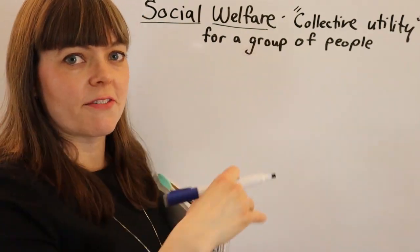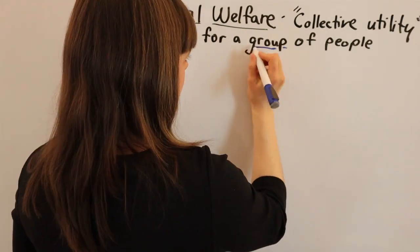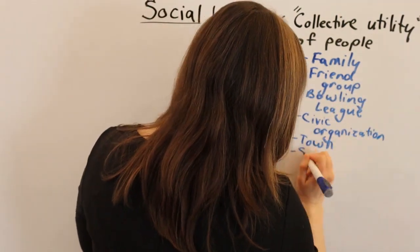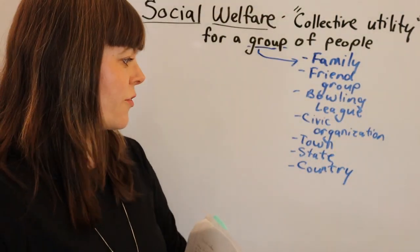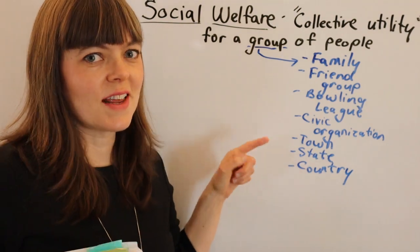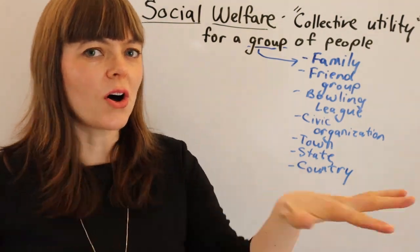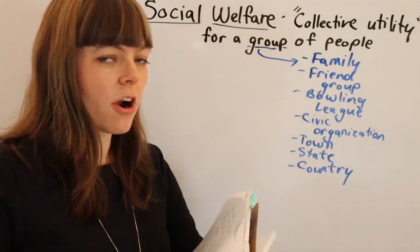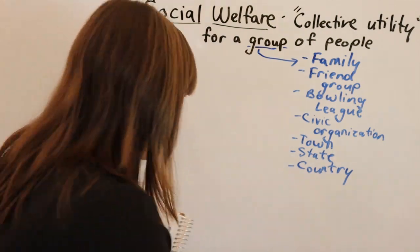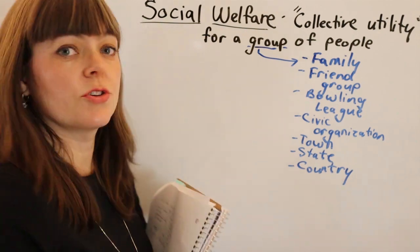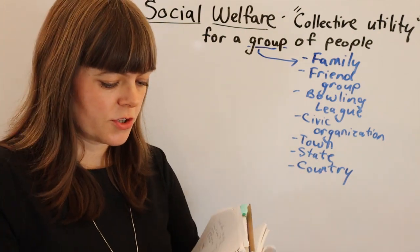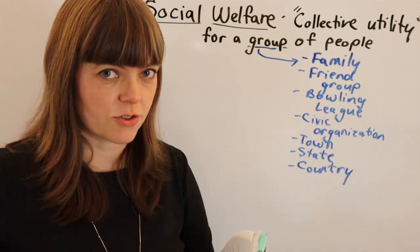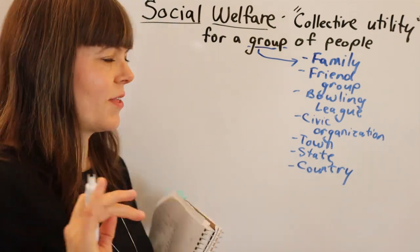So the group is defined in various ways. Of course when we're talking about the town, the state, and the country, we're talking about all of the citizens in those places. There are different types of social welfare functions that we might want to use, and I'm going to identify three classic structures for organizing social welfare functions.